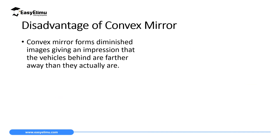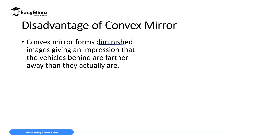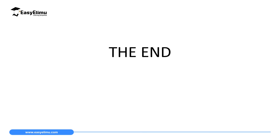We also have some disadvantages of convex mirrors. One disadvantage is that convex mirrors form diminished — very small — images, giving the impression that vehicles behind are farther away than they actually are. A vehicle can be approaching you, but the mirror will show it as very far away, which can easily cause accidents. That marks the end of today's lesson. In the next lesson we will discuss spherical aberration.